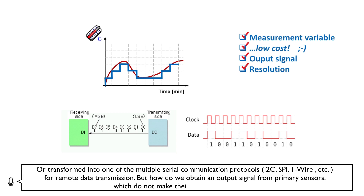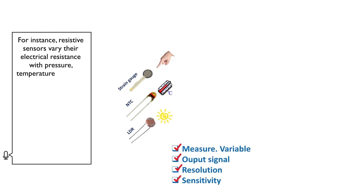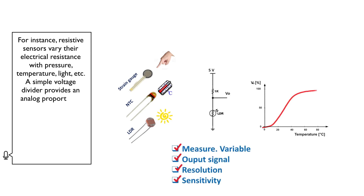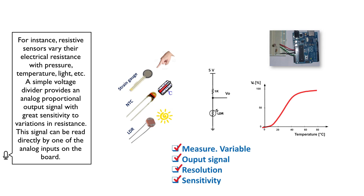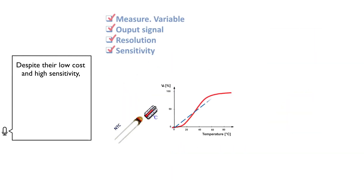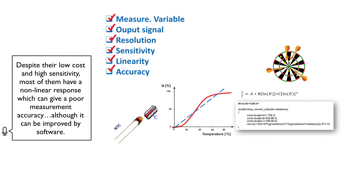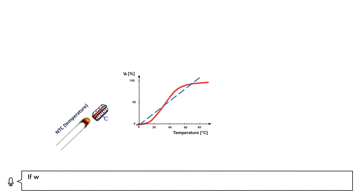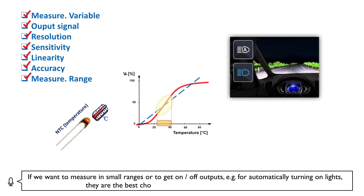How do we obtain an output signal from primary sensors which do not make their own electrical signal? For instance, resistive sensors vary their electrical resistance with pressure, temperature, light, etc. A simple voltage divider provides an analogue proportional output signal with great sensitivity to variations in resistance. This signal can be read directly by one of the analogue inputs on the board. Despite their low cost and high sensitivity, most have a non-linear response which can give poor measurement accuracy, although it can be improved by software. If we want to measure in small ranges or get on-off outputs — for example, automatically turning on lights — they are the best choice because of their simplicity and low cost.